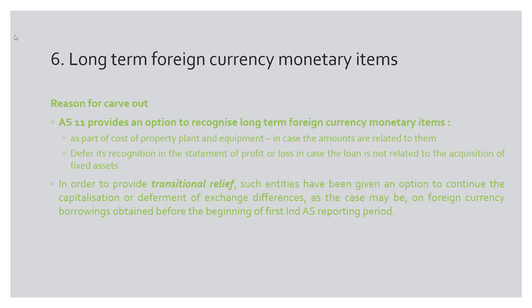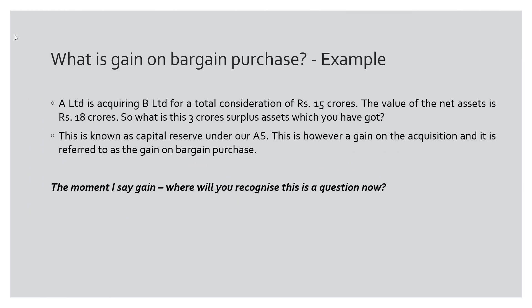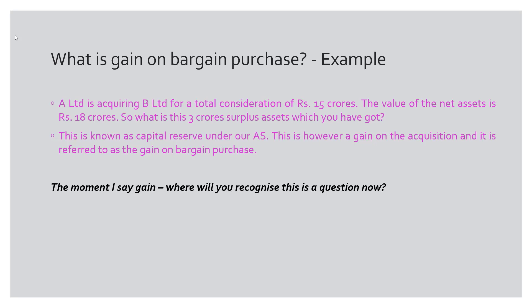Let's move to the next carve-out, which is on Ind AS 103 Business Combinations relating to gain on bargain purchase. Let me explain the meaning. Suppose entity A Limited is planning to acquire entity B Limited. The consideration for this transaction is rupees 15 crores. The value of net assets to be transferred from B Limited to A Limited is rupees 18 crores. So the surplus of 3 crores — assets you have received over what you paid — is known as capital reserve under our accounting standards, but it is referred to as gain on bargain purchase under Ind AS.